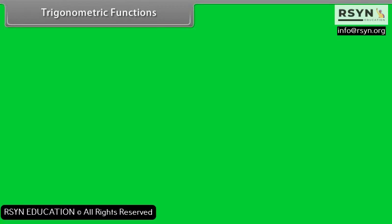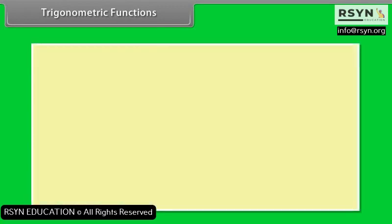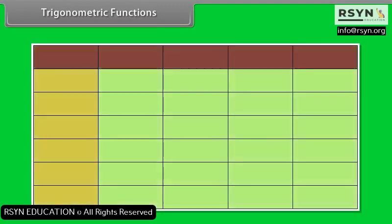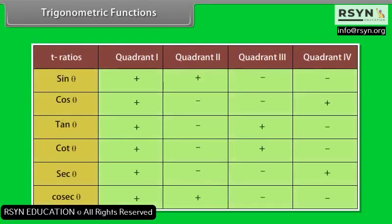The table below gives the signs of all trigonometric ratios in each quadrant.